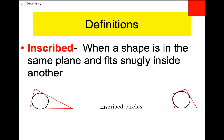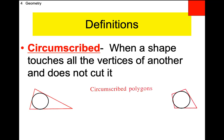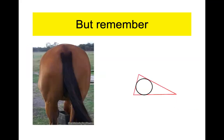Here come the definitions. From the last class — you don't need to write this one down, but Danny does. Remember, 'inscribed' talks about the shape on the inside. So this is an inscribed circle — you're talking about the shape on the inside. The opposite of that is 'circumscribed' — you're talking about the shape on the outside. This is a triangle that circumscribes a circle. This is a kite that circumscribes a circle. Those are those two words.